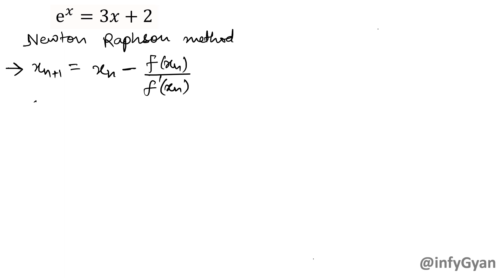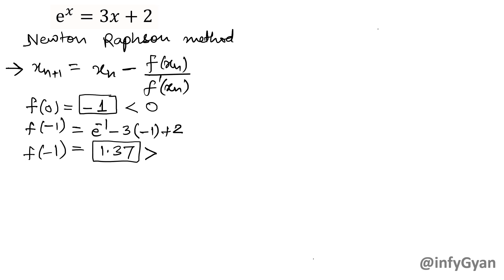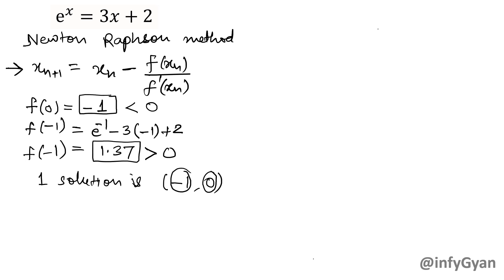Let me find out a few values. F(0) we already calculated — it is negative 1. F(−1): e raised to the power minus 1 minus 3 times minus 1 minus 2, which is 1/e plus 3 minus 2. Since 1/e is approximately 1/2.7, this simplifies to approximately 1.37, which is positive. F(0) is negative and f(−1) is positive. That means one root — one solution — is in between minus 1 and 0.